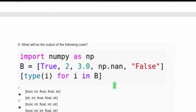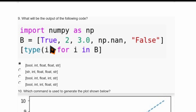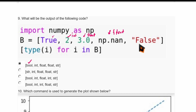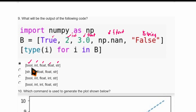Next question: given the list b = [True, 2, 3.0, np.nan, 'False'], what are the types of each element? True is boolean, 2 is integer, 3.0 is float, np.nan is also float, and 'False' enclosed in double quotes is a string — not boolean. So the types are: boolean, integer, float, float, string. The first option is correct.